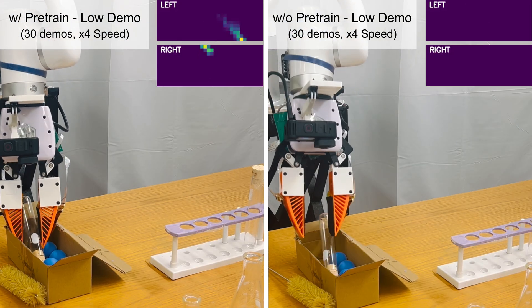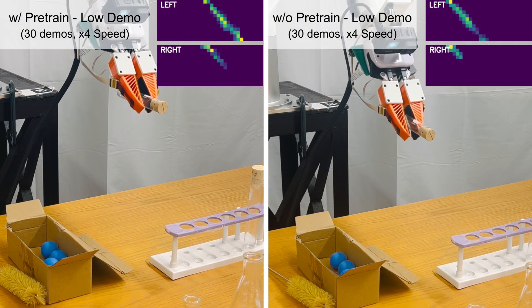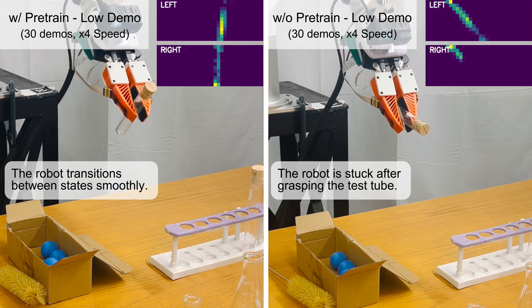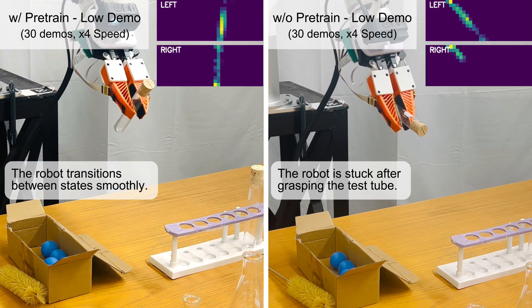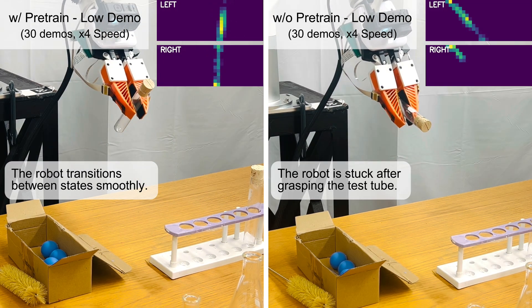In the low demo regime, with only 30 demonstrations, our policy with pre-training smoothly transitions from grasping to reorienting the test tube, whereas the policy without pre-training gets stuck after grasping the test tube.